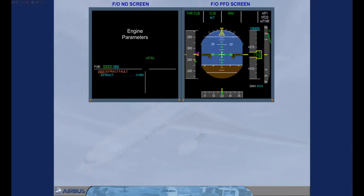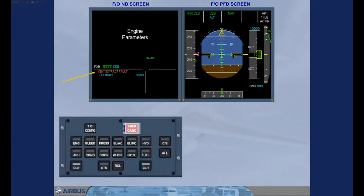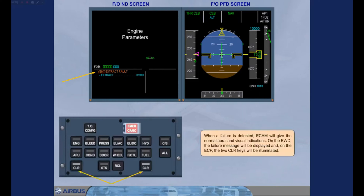When a failure is detected, E-CAM will give the normal oral and visual indications. On the engine warning display, the failure message will be displayed, and on the E-CP the two clear keys will be illuminated.